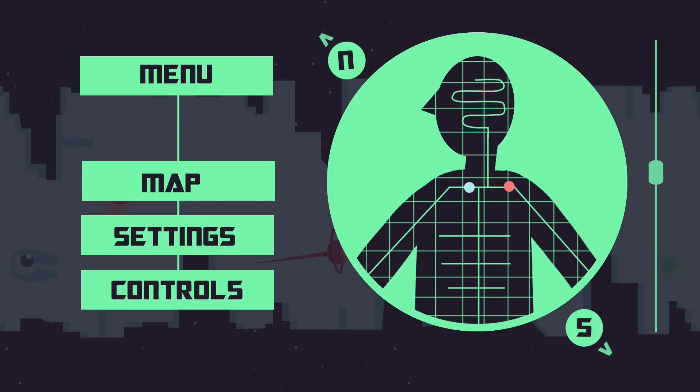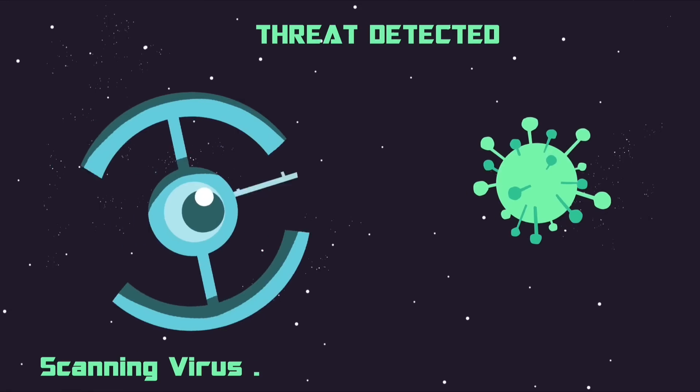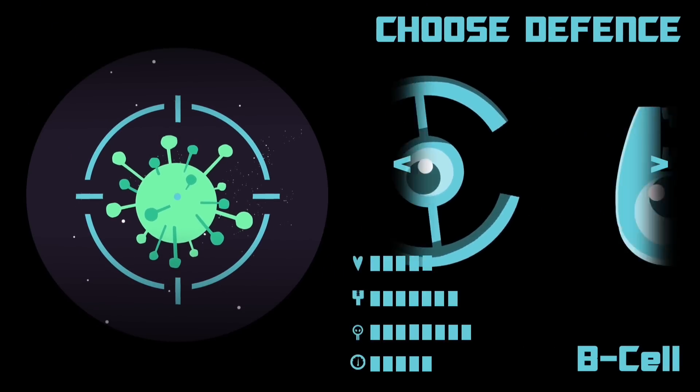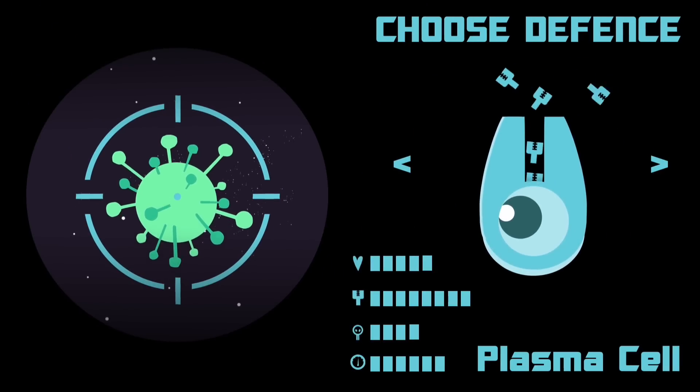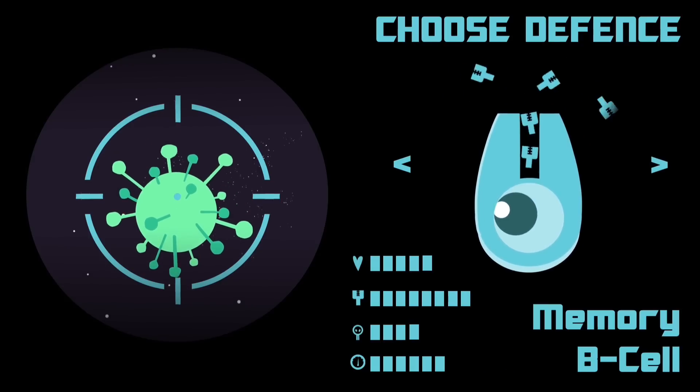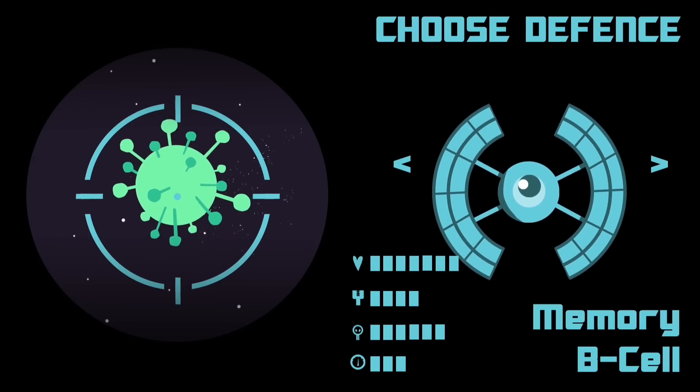After they first encounter a threat, such as a virus, B cells can either become mini antibody factories called plasma cells, producing the stuff that fights the intruder, or they can become memory B cells, which recall and respond if it reappears.